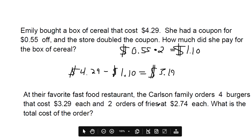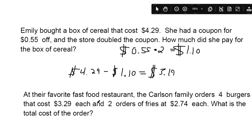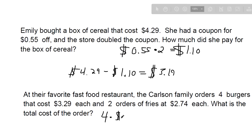And at their favorite fast food restaurant, the Carlson family orders four burgers that cost $3.29 each, and two orders of fries at $2.74 each. What is the total cost of the order?